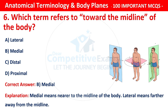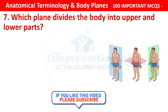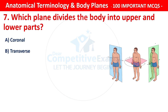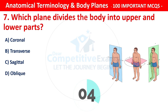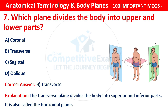Question number 7: Which plane divides the body into upper and lower parts? Options are: coronal, transverse, sagittal, or oblique. The correct answer is B — that is transverse. The transverse plane divides the body into superior and inferior parts. It is also called the horizontal plane.